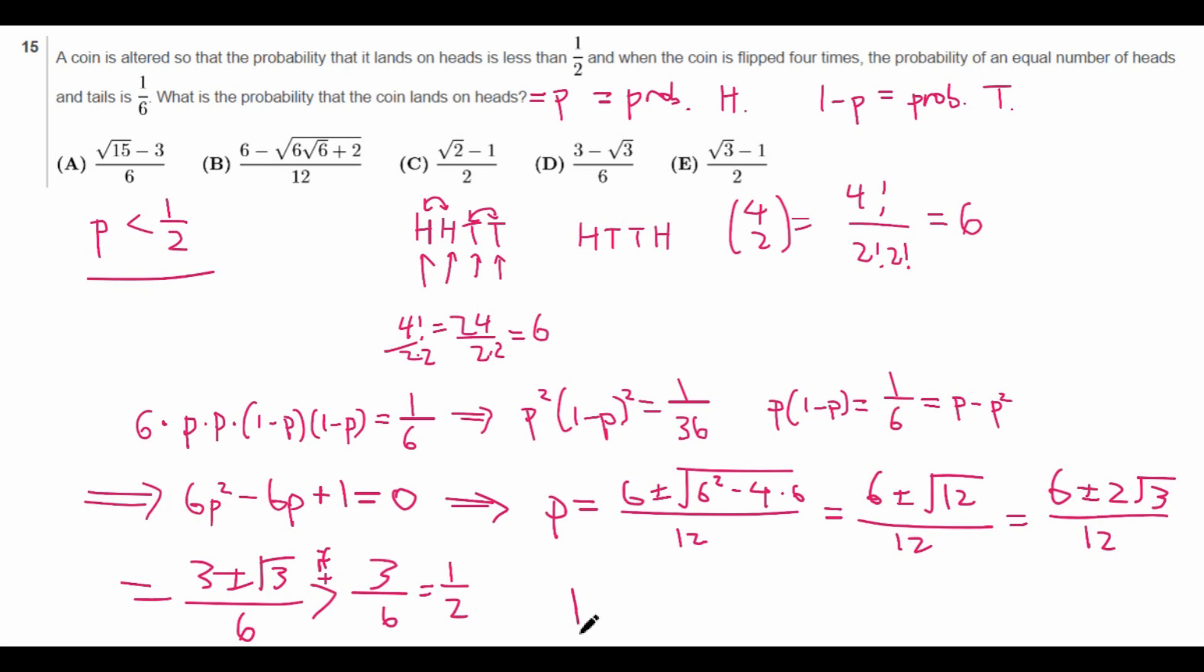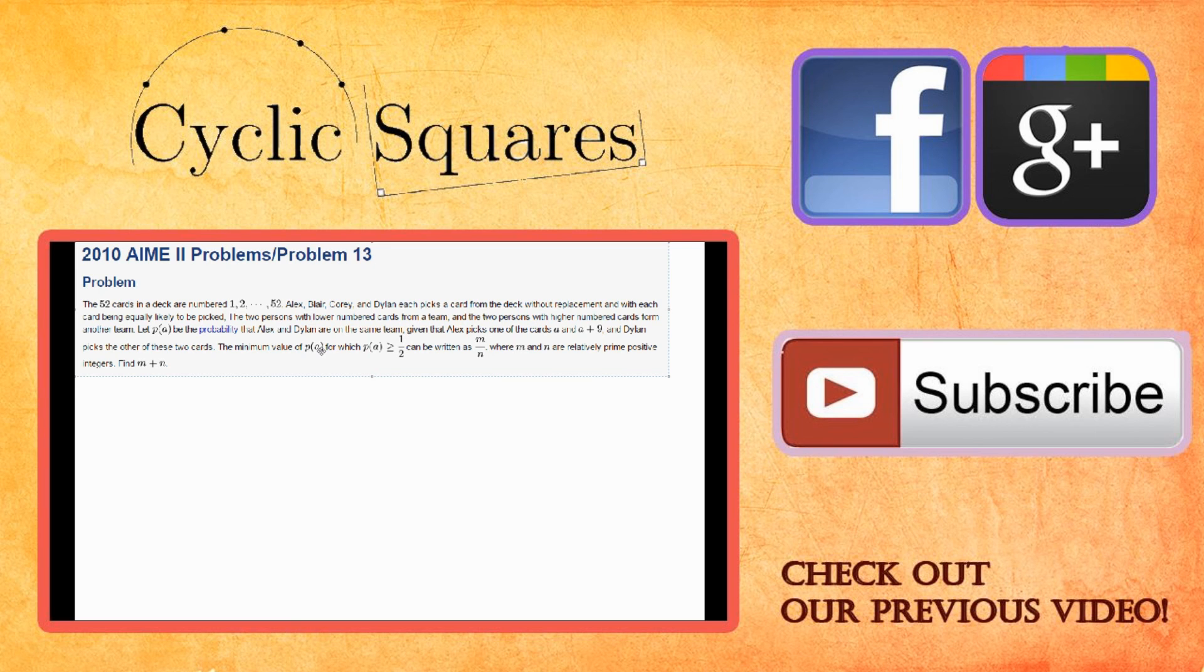So that means we must have that P is equal to 3 minus root 3 over 6. And we look back up to see if it's there. And indeed, D has the answer 3 minus root 3 over 6. So we're done. Today we're going to be doing a problem from AMC 2010. Since the problem is in pretty low quality, I will read it out loud for you.